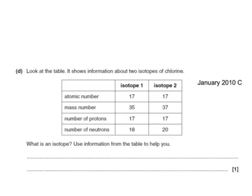And here's finally an exam question. Look at the table. It shows some information about two isotopes of chlorine. Well, we can tell that they're isotopes of the same element because they've got the same atomic number. Both have got an atomic number of 17, so they've got 17 protons. But look, they've got different mass numbers because they're different numbers of neutrons.